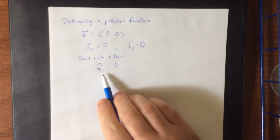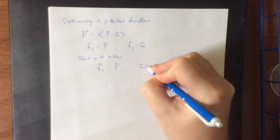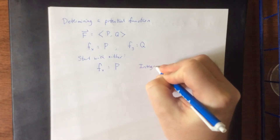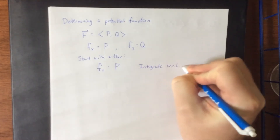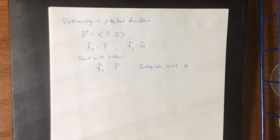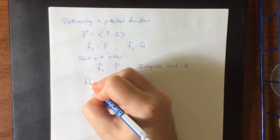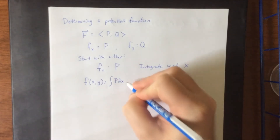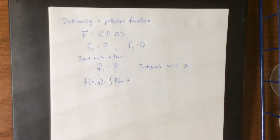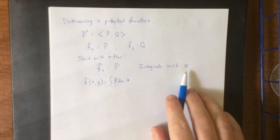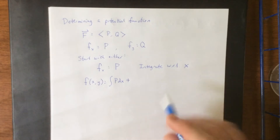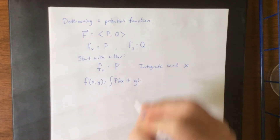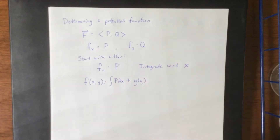We know that the partial derivative of f with respect to x is equal to p, so what we're going to do is integrate with respect to x. This would be considered an iterated integral where we're treating y as though it's a constant. Upon integrating with respect to x, we will have f(x,y) equal to the iterated integral of p with respect to x. However, because this is an indefinite integral, anything with a y in it could potentially be a constant, which means we're going to have plus some function of y — not just a generic plus c.